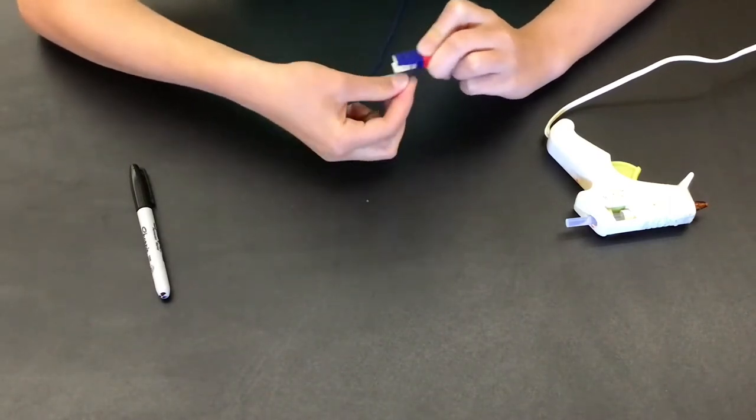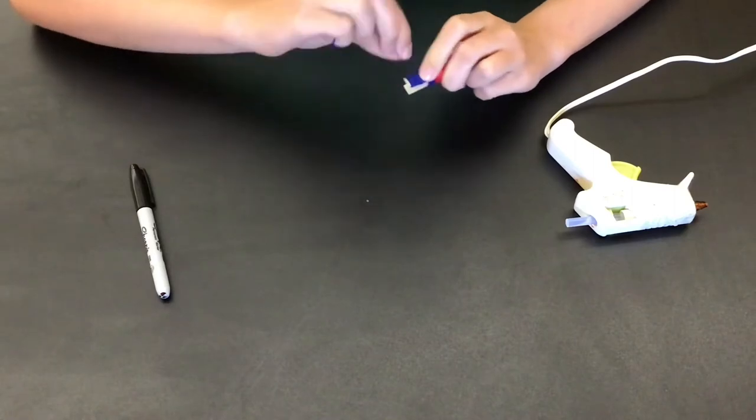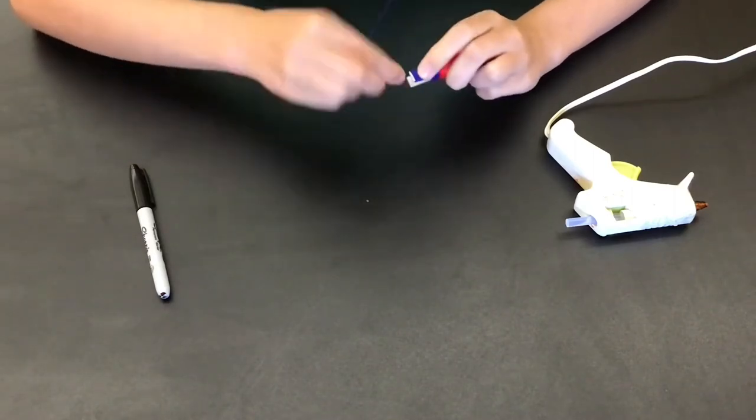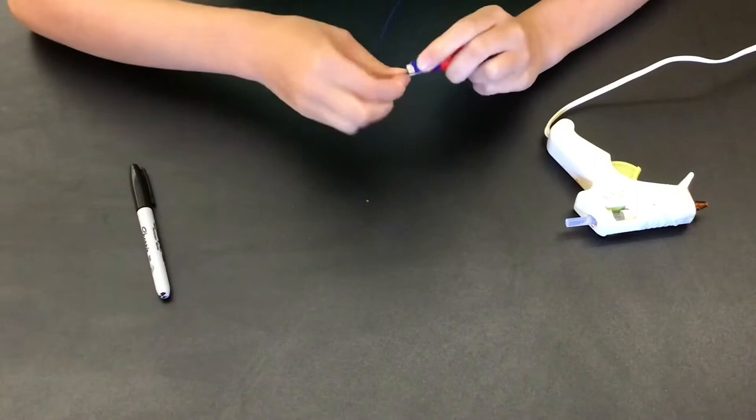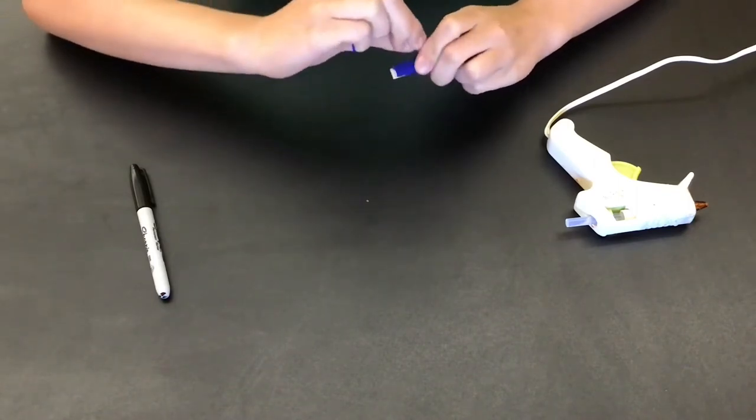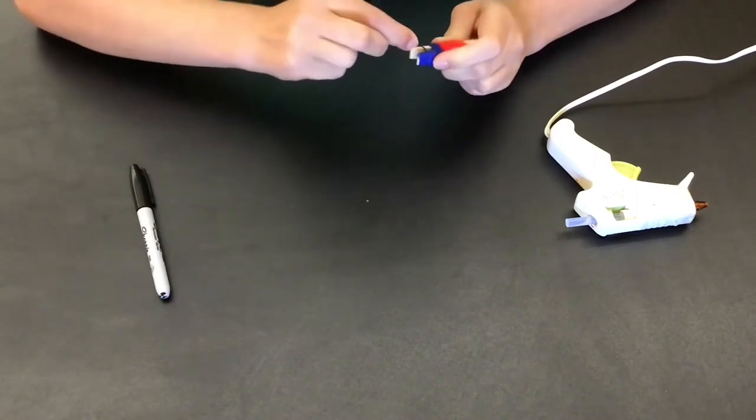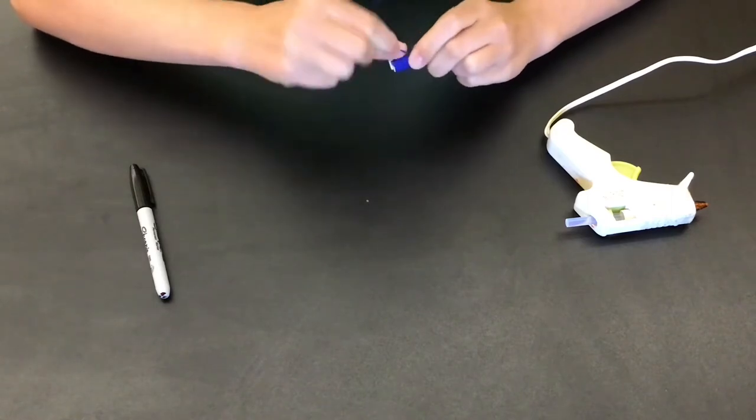Or you can make your clothespin doll wear like a skirt or a dress. You can take, instead of wrapping around each individually, around each little handle piece, you can just wrap them together and it'll make a dress or skirt.